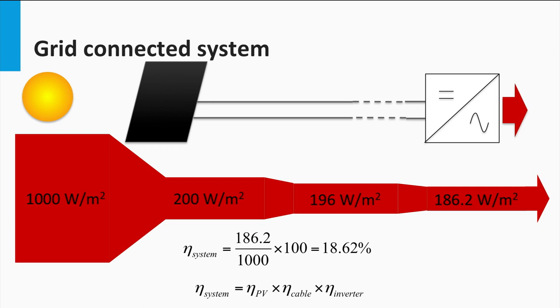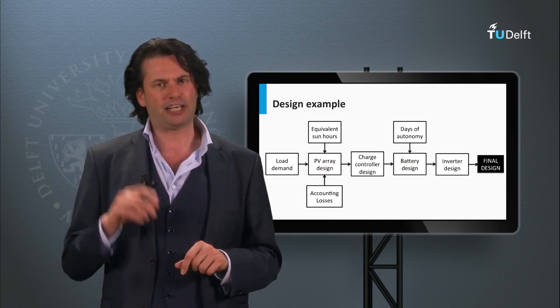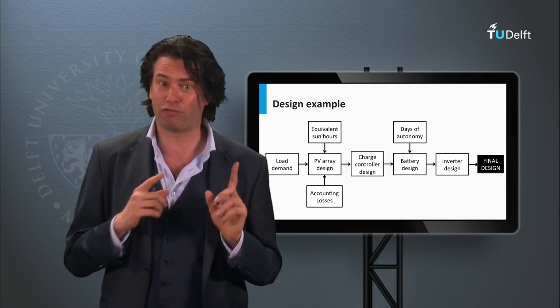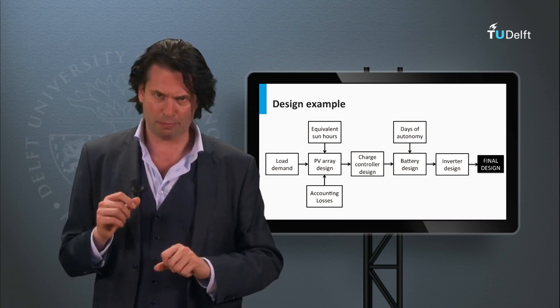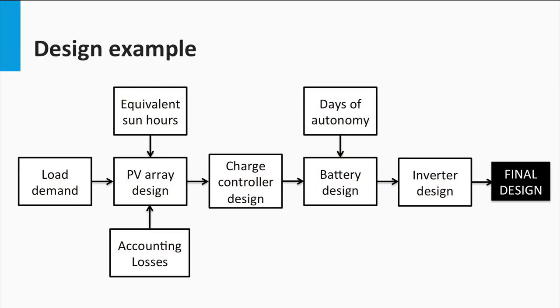It can also be said that the overall system efficiency is calculated as the product of the various component efficiencies. That is, eta system equals eta PV times eta cable times eta inverter. Now, let us move on to the design of a simple grid-connected PV system. As a quick recap, let us look back at the flowchart of the stand-alone PV system design process. You will remember that the system design process had several steps. Given that the grid-connected PV system topology is significantly different than that of the stand-alone PV system, how does the flowchart of the grid-connected PV system differ from the stand-alone system design?